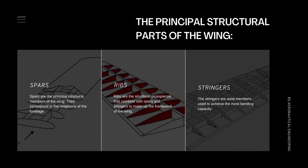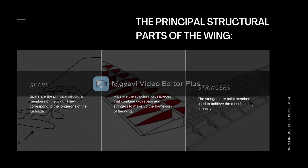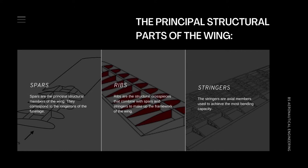Spars run parallel to the lateral axis of the aircraft from the fuselage toward the tip of the wing, and are usually attached to the fuselage by wing fittings, plain beams, or a truss. Spars may be made of metal, wood, or composite materials depending on the design criteria of a specific aircraft.